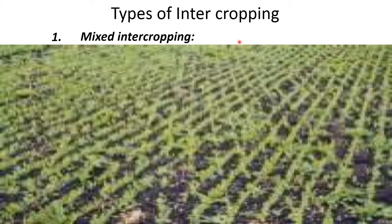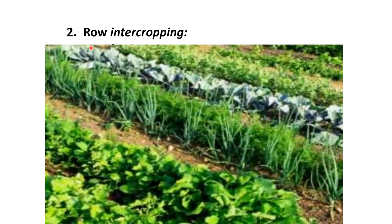Types of intercropping. The first one is mixed intercropping — growing two or more crops simultaneously with no distinct row arrangement. Example is wheat and mustard, or fodder maize and fodder cowpea. Second is row intercropping — growing one or more crops simultaneously with one or more crops planted in rows. Example is cotton plus chili, or groundnut and maize.